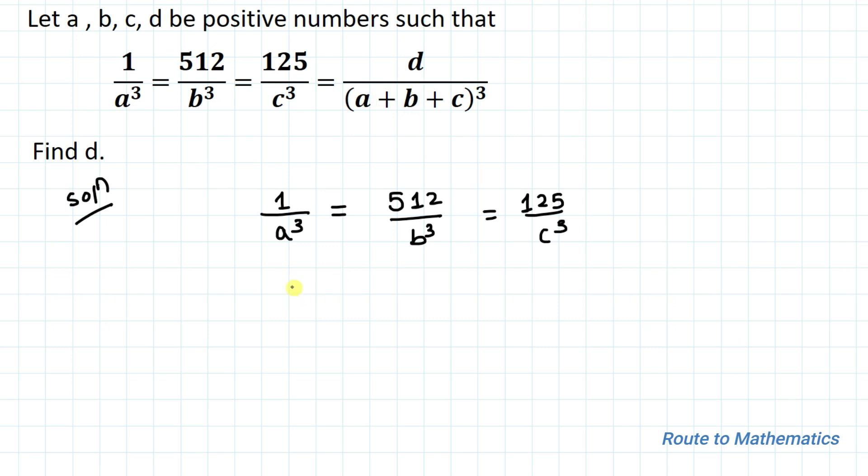We're asked to find the value of d. We have d/(a+b+c)³ = 1/a³. We have already found b = 8a and c = 5a from the given equation. Now let's substitute the values of b and c.